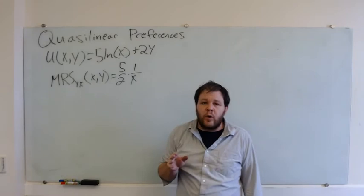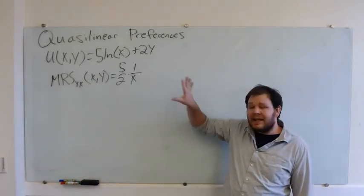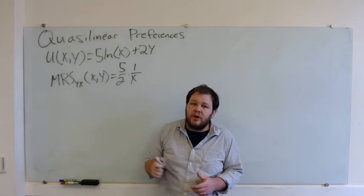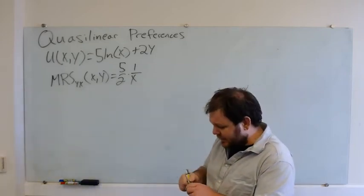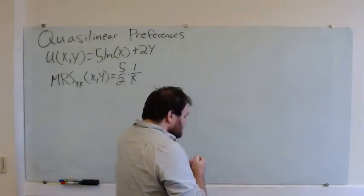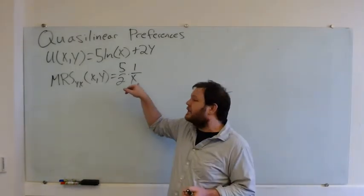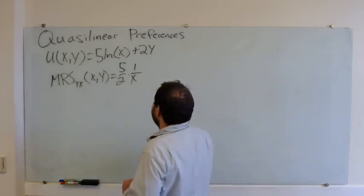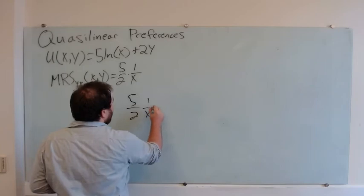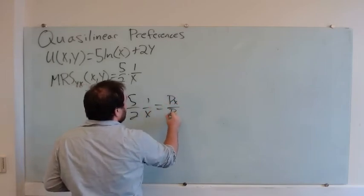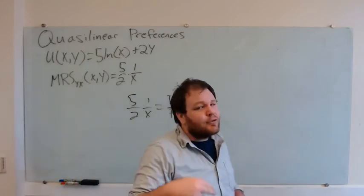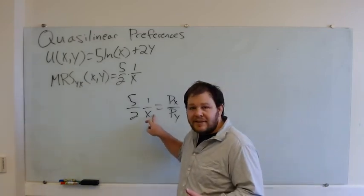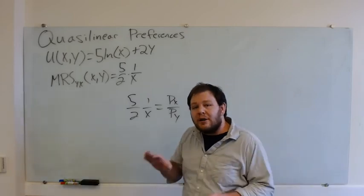So the last word on quasi-linear preferences: what we just thought through is essentially that when we don't have enough money, we spend our first dollar and second dollar — some number of dollars — on x, up until the point that buying more x isn't worth it anymore. That's what we found when we set MRS equal to price ratio. This condition basically means an extra unit of x isn't worth it anymore. If we don't have enough cash to do that, we buy all x. If we do have enough, then we stop buying x and as we get richer, we spend all additional money on y.